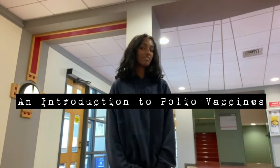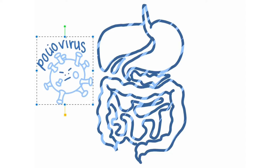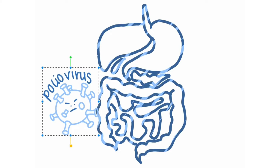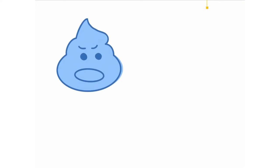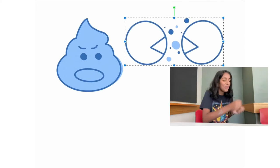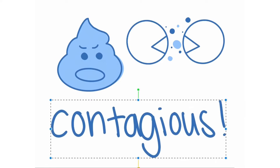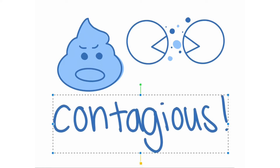This is an introduction to polio vaccines. Polio is an infectious disease caused by a virus that normally lives in the human digestive tract. The virus is transmitted mainly through the fecal-oral route from person to person and is a contagious illness.